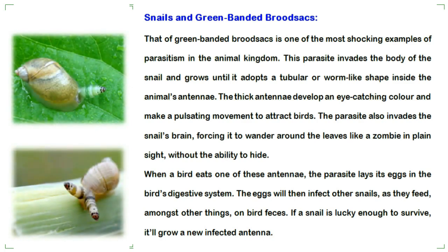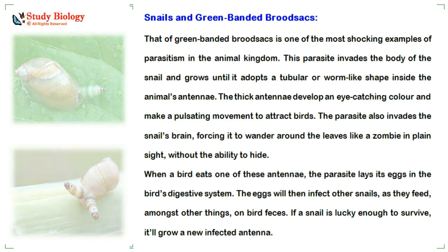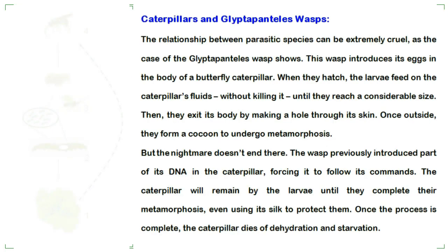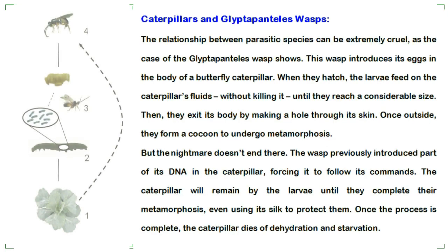The green-banded broodsac is one of the most shocking examples of parasitism in the animal kingdom. This parasite invades the body of a snail and grows until it adopts a tubular, worm-like shape inside the animal's antennae. The antennae develop an eye-catching color and make a pulsating movement to attract birds. The parasite also invades the snail's brain, forcing it to wander around leaves like a zombie in plain sight. When a bird eats one of these antennae, the parasite lays its eggs in the bird's digestive system. The eggs then infect other snails as they feed on bird feces. If a snail is lucky enough to survive, it will grow a new infected antenna.